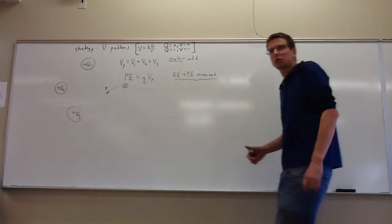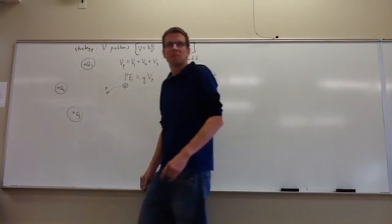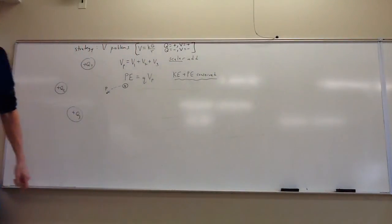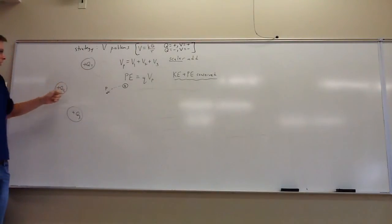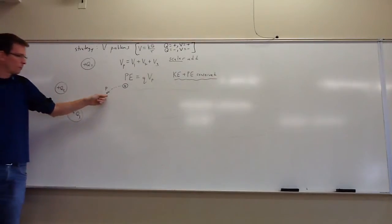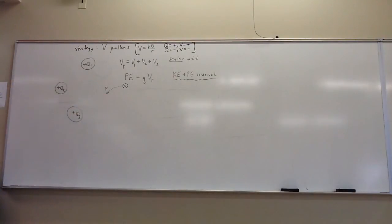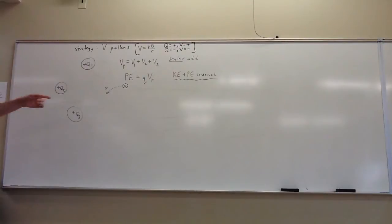We were talking about voltage last time, and I had just gotten a chance to sketch out how you would do a problem. Let me remind you of that, and then we'll go back and actually do an example much like the ones on your homework. Let's say we have a bunch of charges Q1, Q2, Q3, and we have a point P in their neighborhood. One option is to calculate the electric field, which you did in homework one. Another option is to find the voltage.